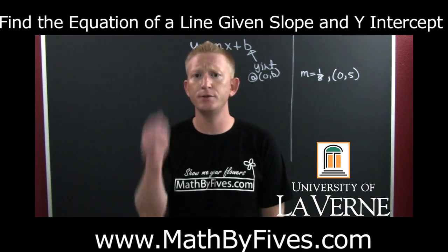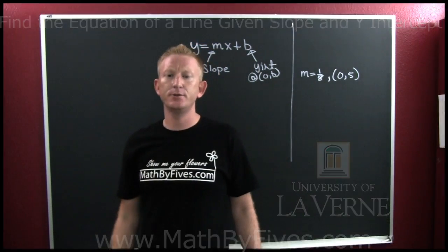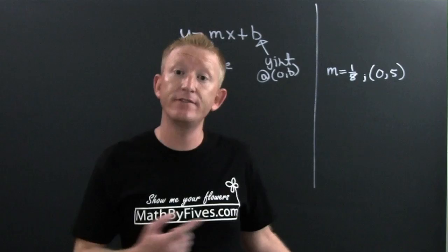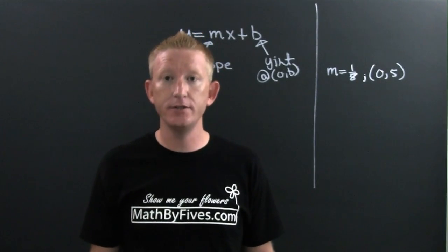What are you going to do when they ask you to find the equation of a line given a point and a slope? Aren't you going to use point slope?